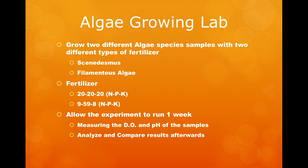You will now conduct an experiment looking at how excess nutrients affect pH and dissolved oxygen of water. You will need two different types of algae and two types of fertilizer. You will set up the experiment and allow it to run for one week, monitoring the quality of the water and comparing the data collected over the duration of the experiment. Thank you for your attention.